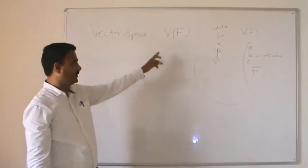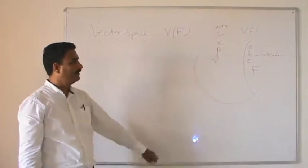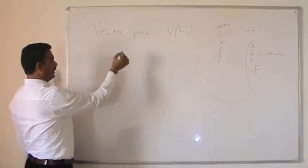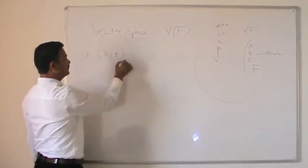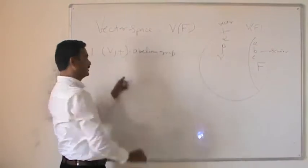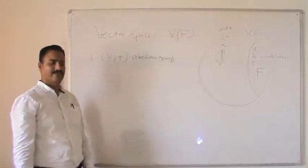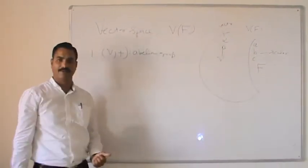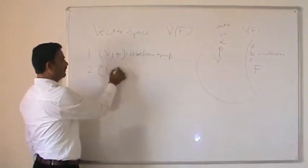V is said to be a vector space if V possesses three important properties. The very first is that V must form an abelian group for the additive operation — requiring closure property, associative property, identity element, inverse property, and commutative property, all five properties for vector addition.